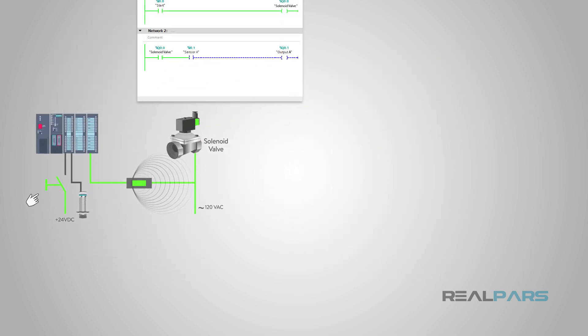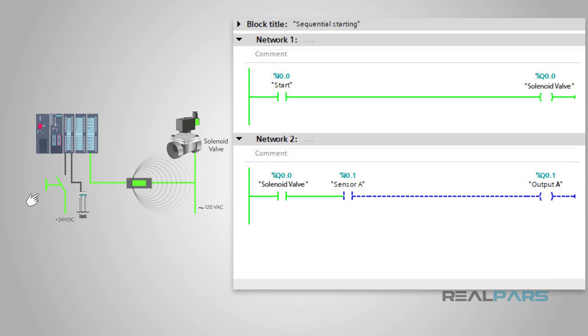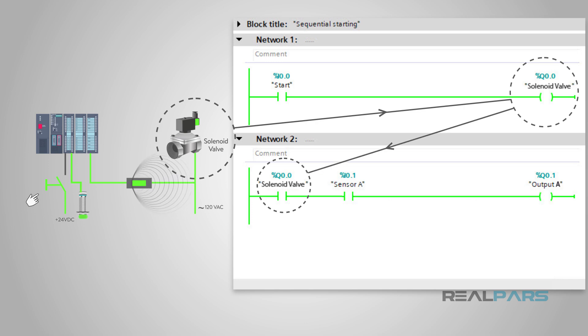In an automated process, that output will typically be programmed as an input to the PLC, and combined with other input devices or programming to keep the process running. With this programming, it can act like a chain reaction with one output device starting before the next is allowed to run. This is also called sequential starting.